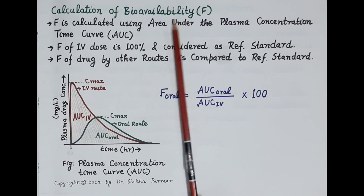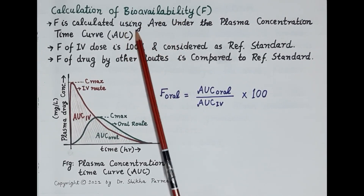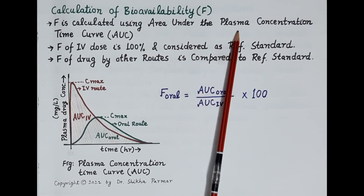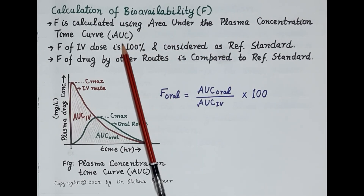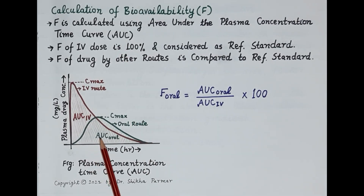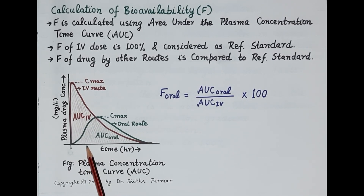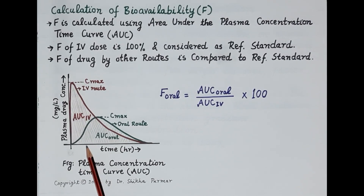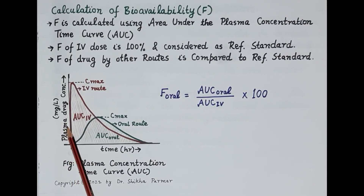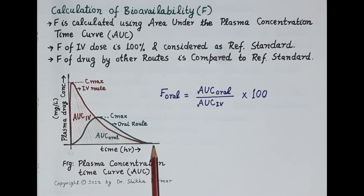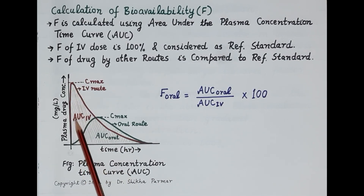Now let's understand how to calculate bioavailability. Bioavailability is calculated using the area under the plasma concentration-time curve, also termed AUC. This figure shows the plasma drug concentration versus time curve. To plot this curve, a drug is administered and blood samples are withdrawn at intervals; the concentration of unchanged drug is determined in plasma. Plasma concentration of unchanged drug is plotted on the y-axis while time is plotted on the x-axis.